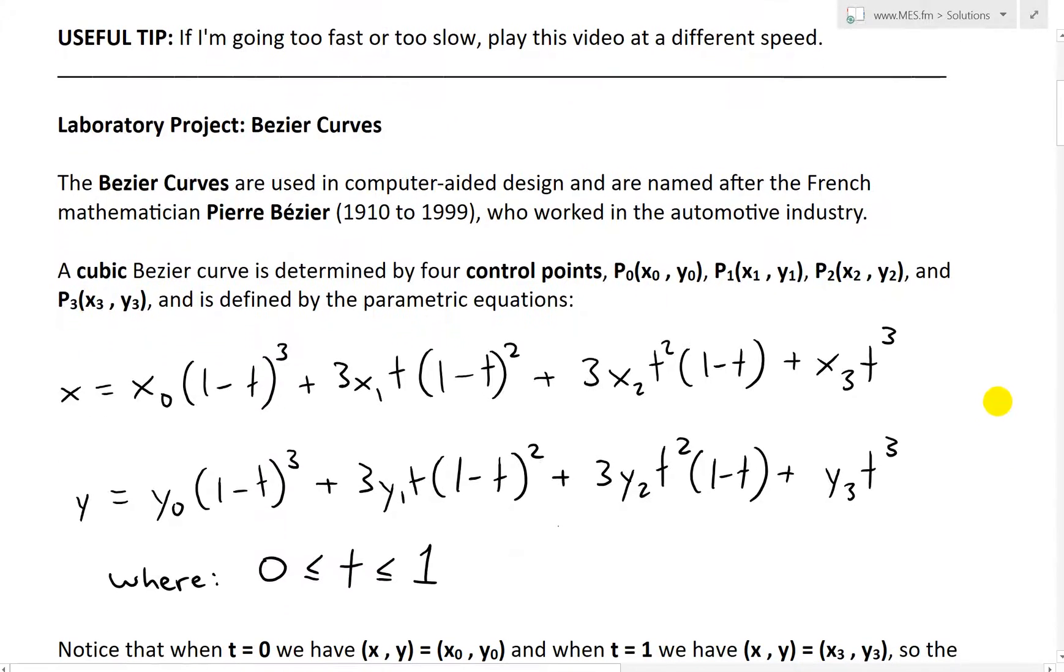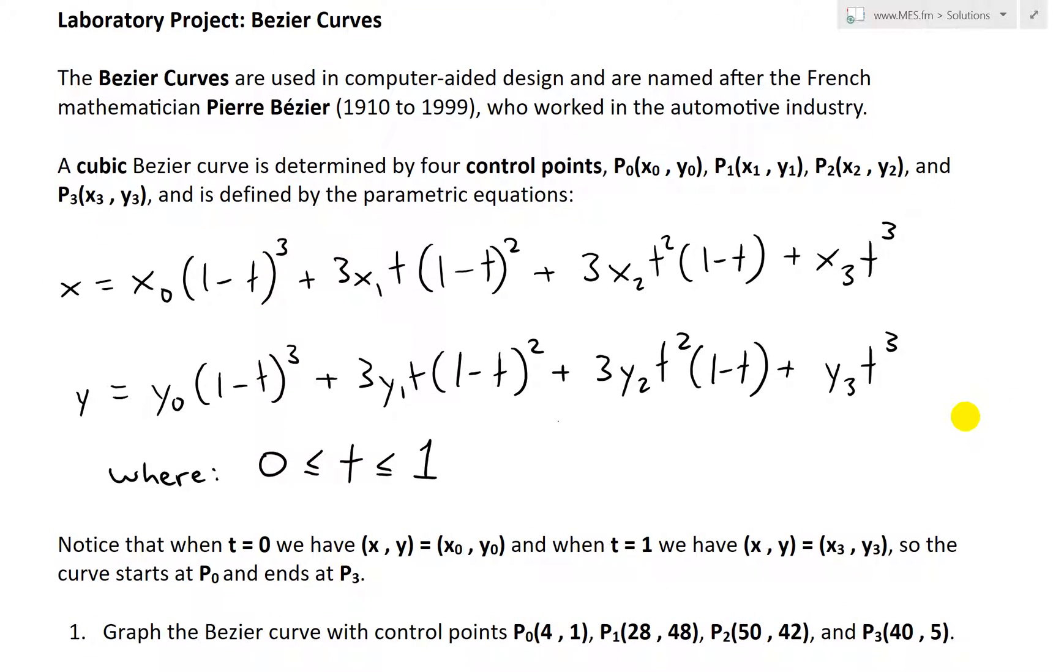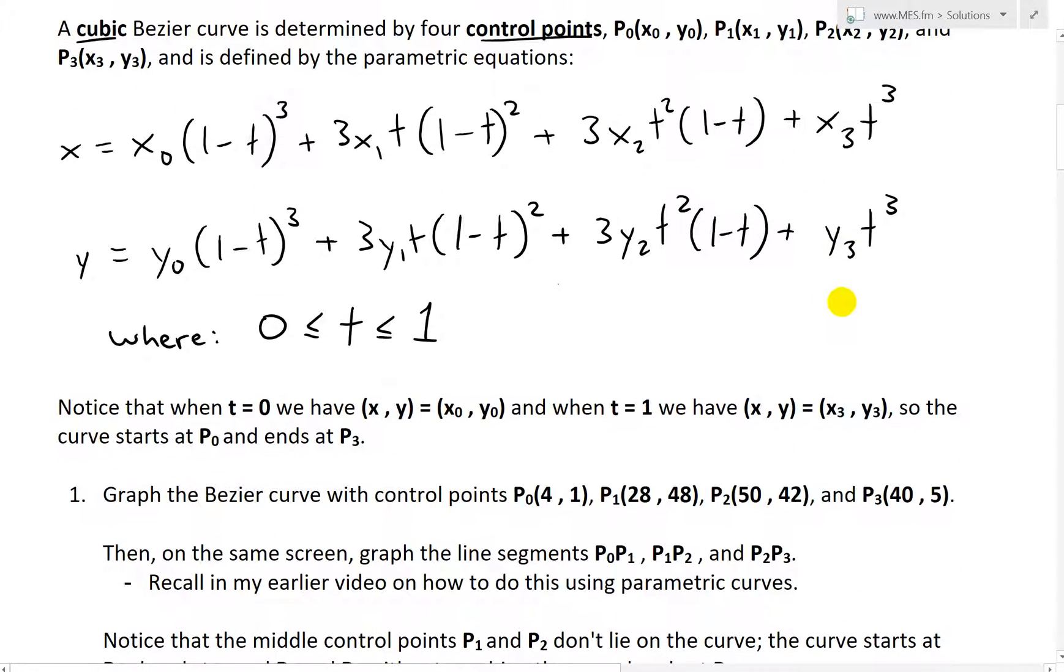So make sure to watch my earlier videos on parts one to four, which are just going over questions one to four. And to quickly recap on the Bezier Curves, they are basically described by a set of parametric equations, and a cubic Bezier Curve is described with four control points, and the coordinates of these are inside these equations, and the parameter t is from zero to one.